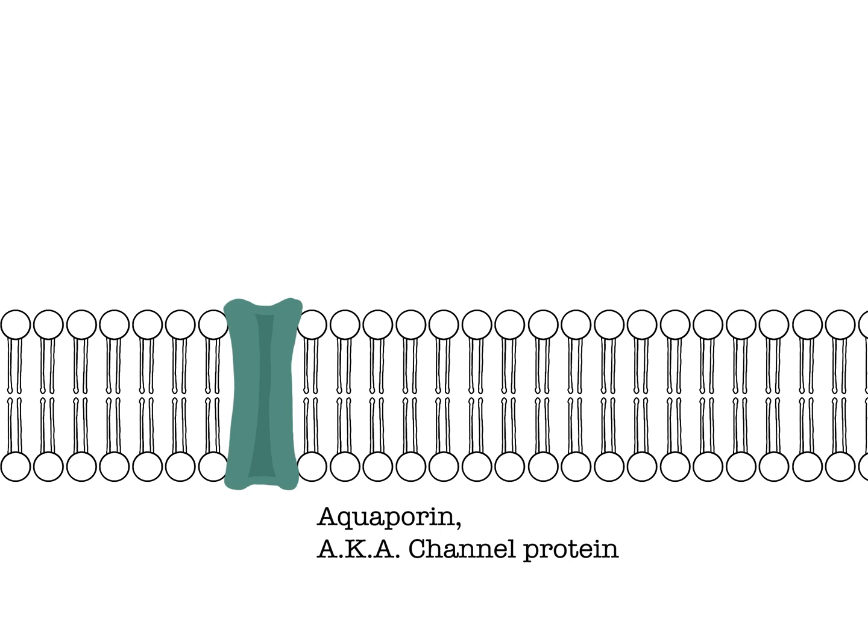This is an aquaporin. It is shaped like a channel. As the name implies, it allows water molecules to pass through. Since the insides of the bilayer is hydrophobic, water is unable to pass through the membrane naturally. That is why an aquaporin is needed. The transport of water is called osmosis.